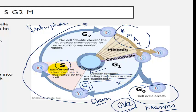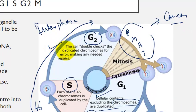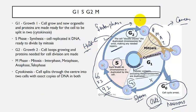Rather than chromosomes being duplicated in G1, the chromosome number is doubled in the S phase. For example, a human with 46 chromosomes will have a double content of about 92. If there is any error in chromosome duplication or DNA replication, it may cause cancer. Double-checks are performed on duplicated chromosomes, and if any repair is required, the cell halts and never enters the mitotic phase.